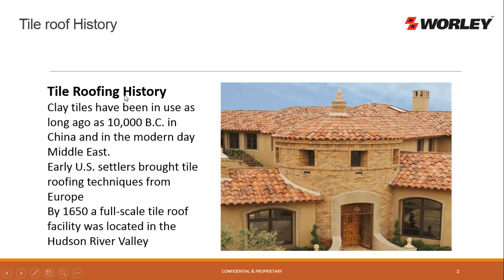History of tile — it goes back about 10,000 years, from China to the modern-day Middle East. Settlers brought this technique over around 1650 and set up a full-scale operation in the Hudson Valley. Tile is made from clay, baked in a kiln and shaped into tiles. It's been around a long time.